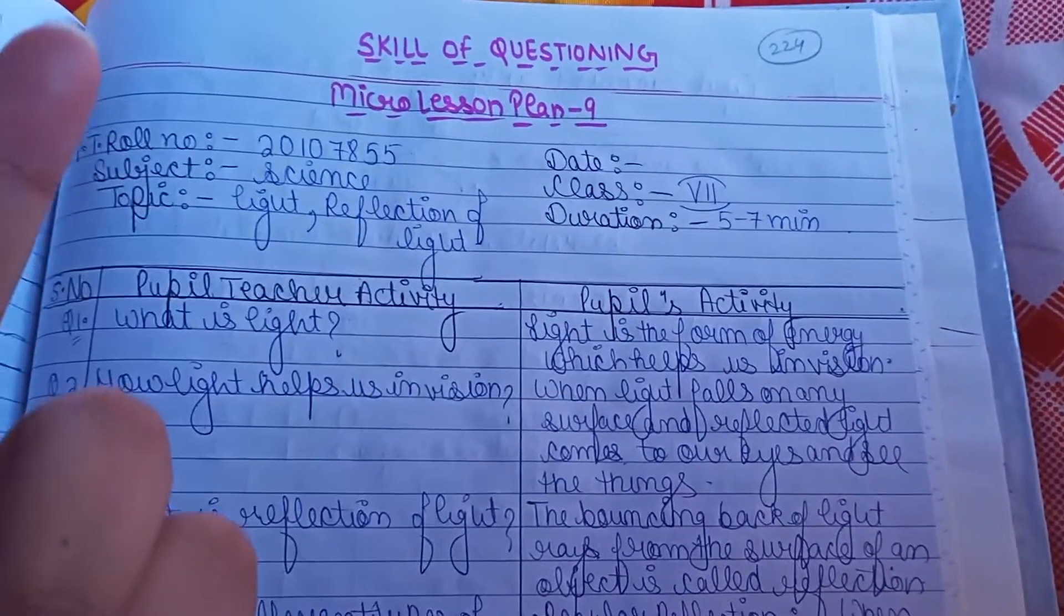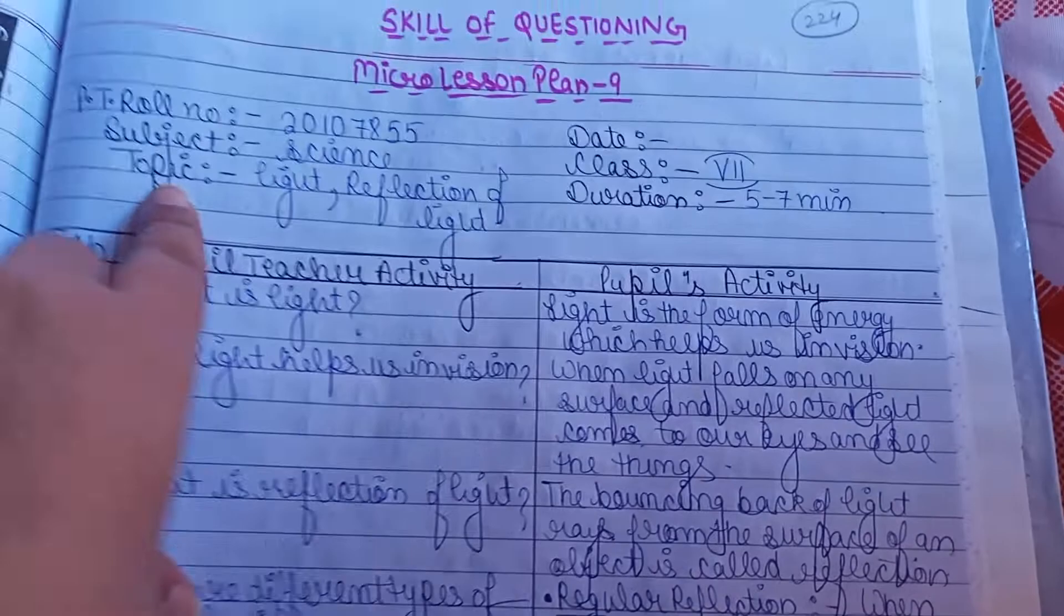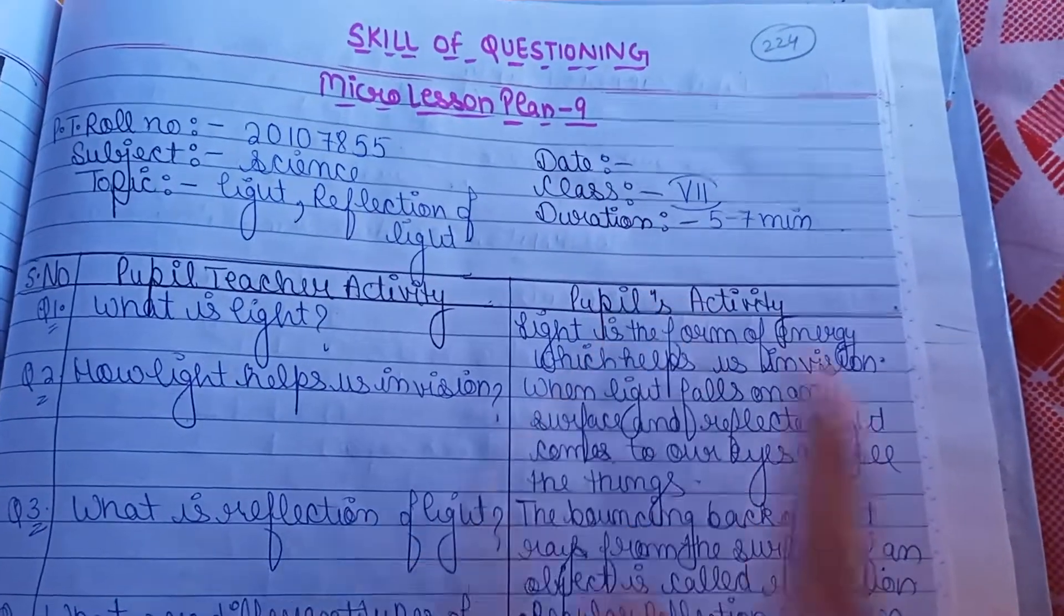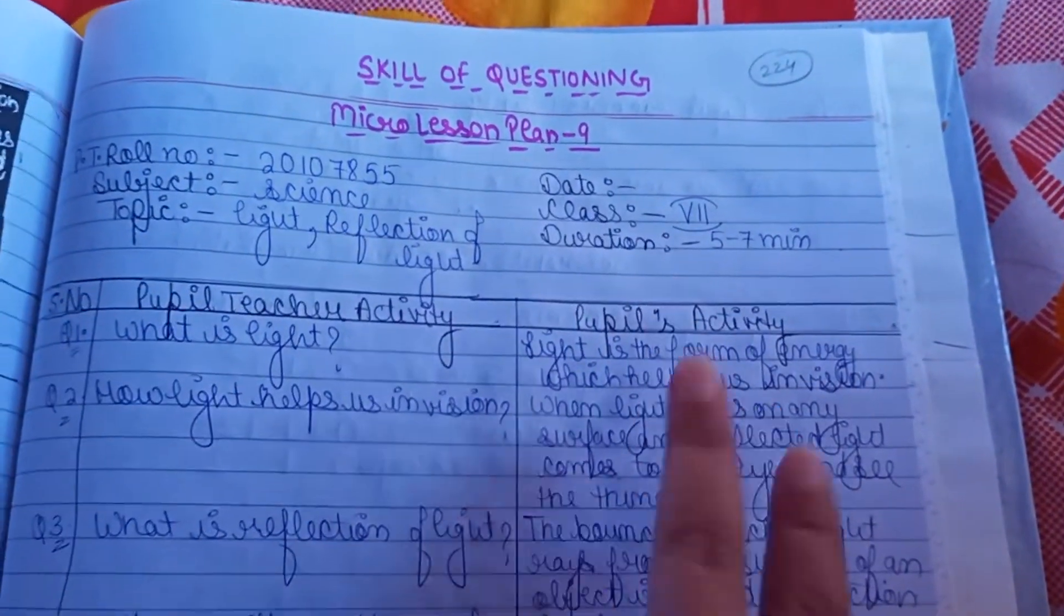Questioning is clear that we have to question. So according to this skill, we will make it as a macro with the format: PT roll number, subject, topic, date, class, and duration.